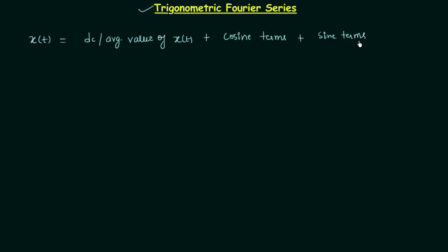Our task in trigonometric Fourier series is to obtain the DC or average value of signal x(t), which we already know how to calculate. Then we obtain the cosine terms and then the sine terms, and their sum gives us the Fourier series expansion of the given periodic signal.